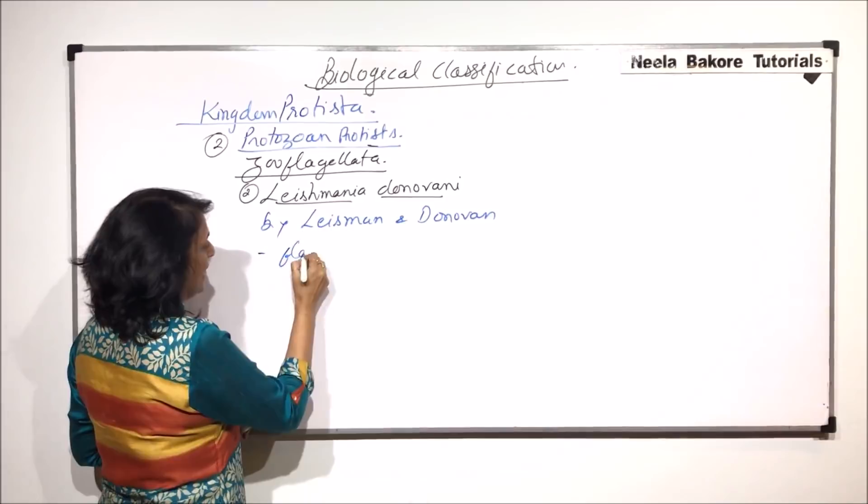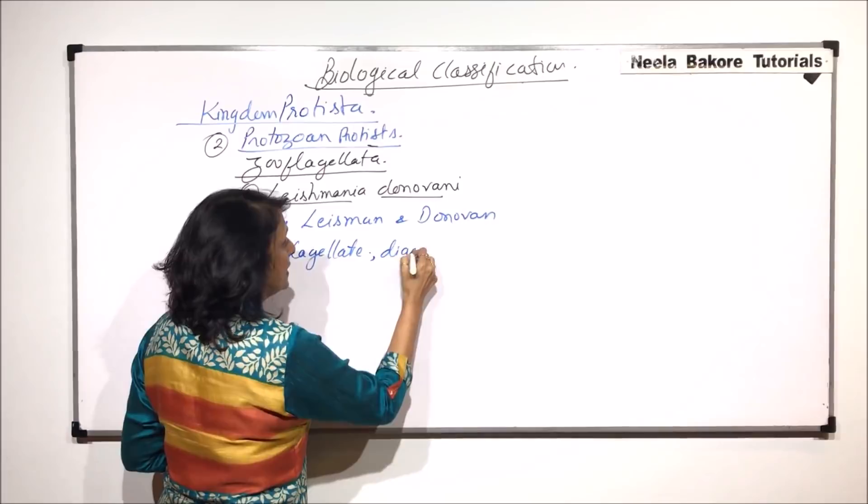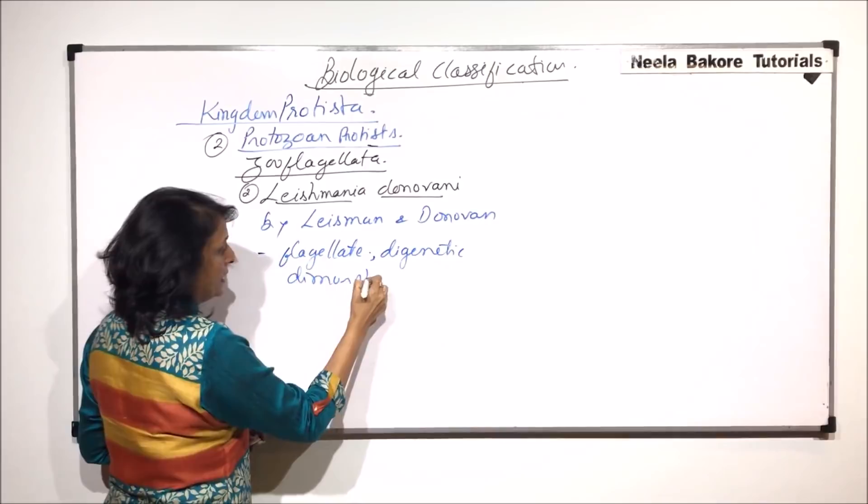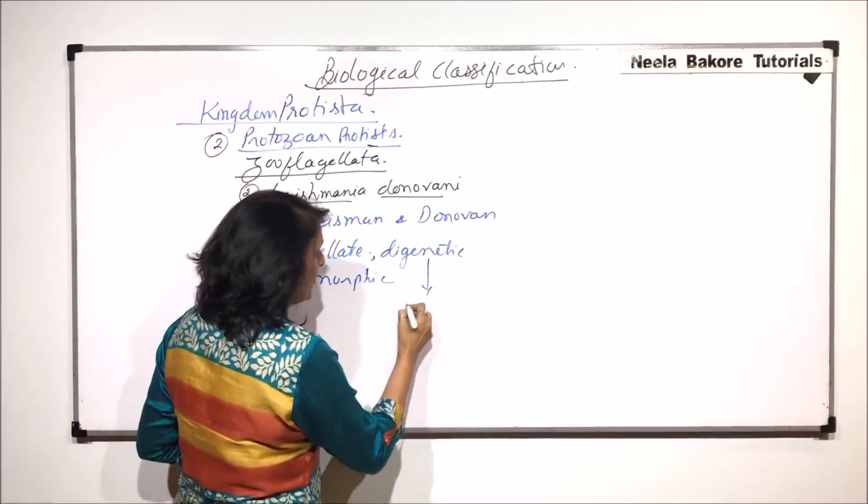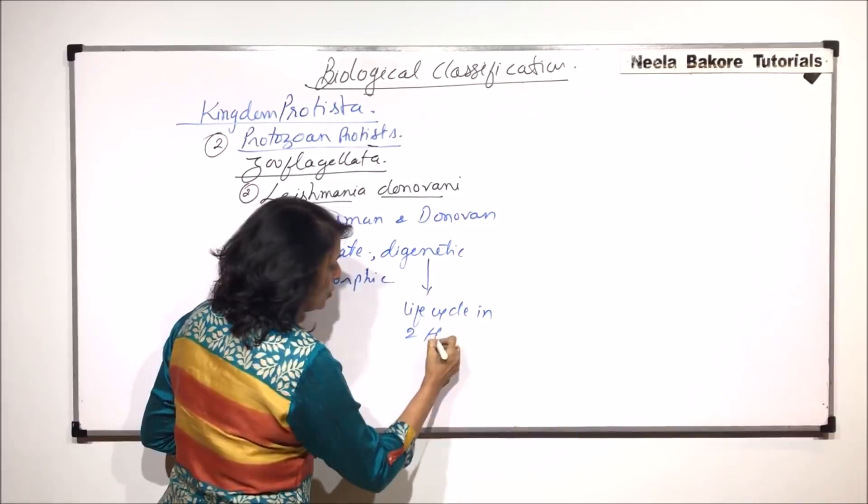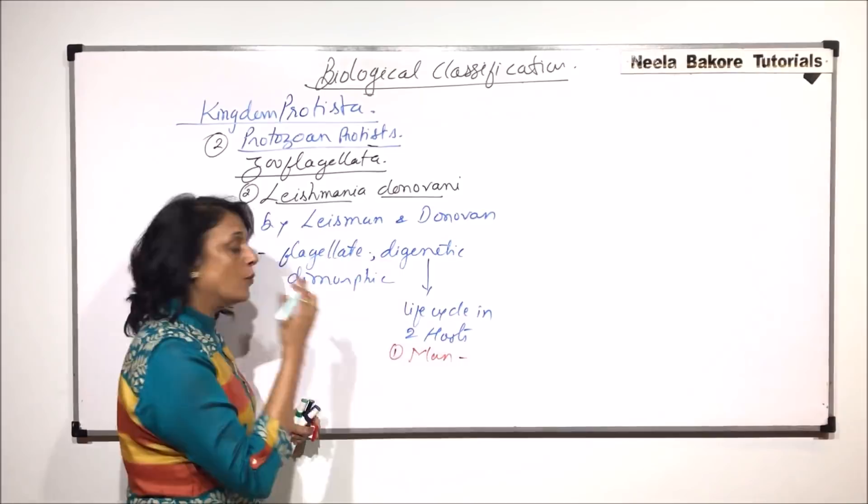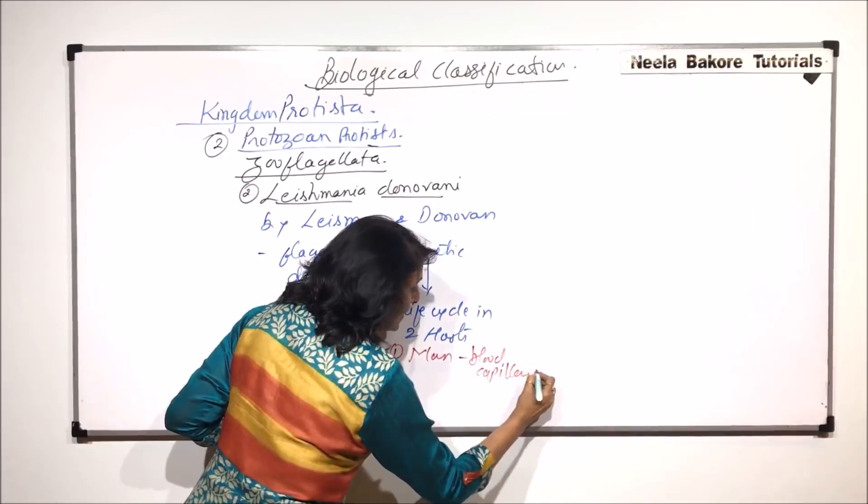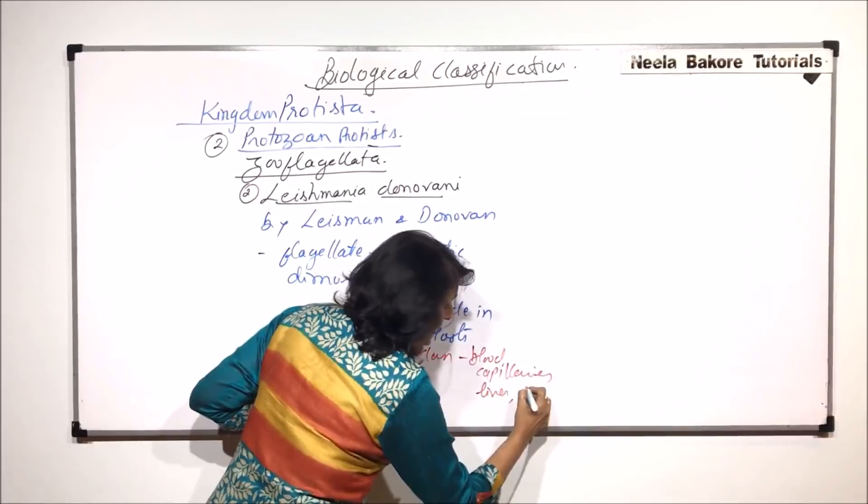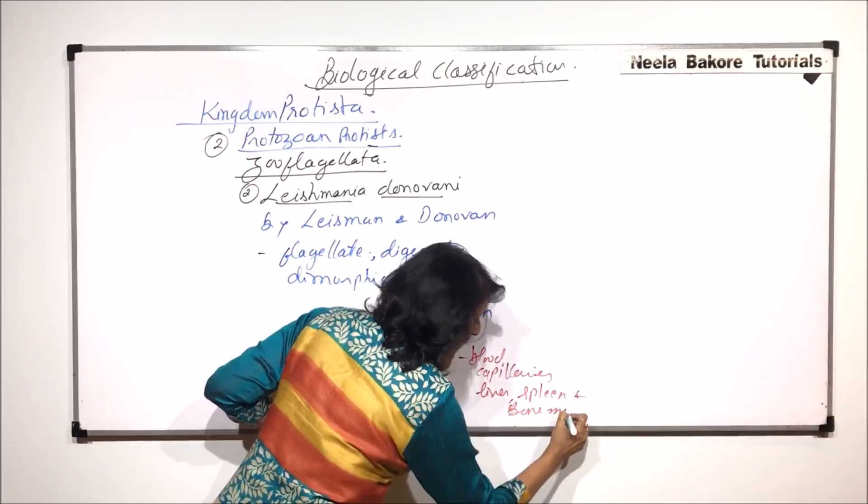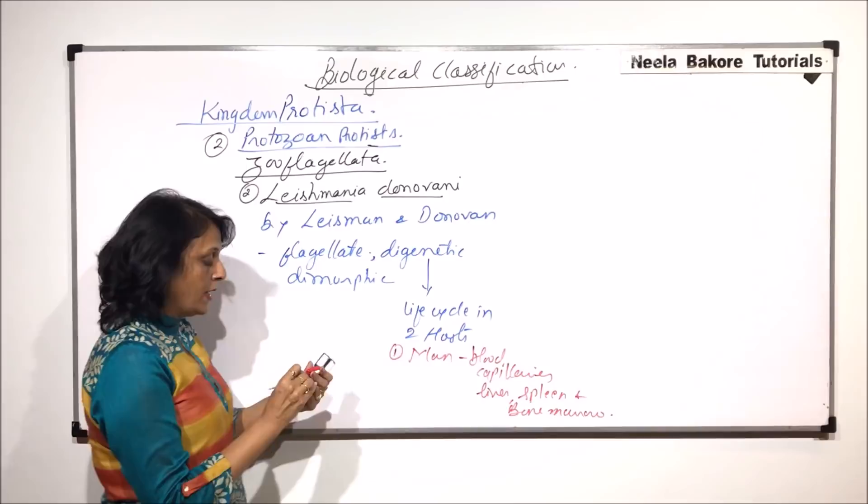It is a flagellate, digenetic and dimorphic protist. Digenetic means it completes its life cycle in two hosts, and these two hosts are one, man. In human beings it is found in blood capillaries, especially of liver, spleen, and bone marrow. So in these blood capillaries this pathogen is found.